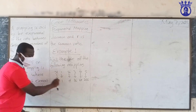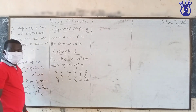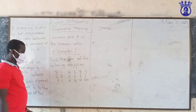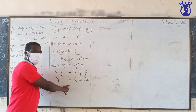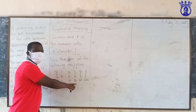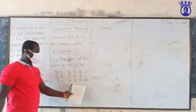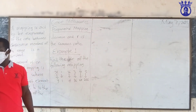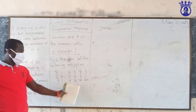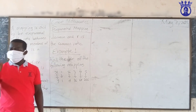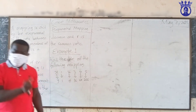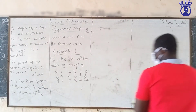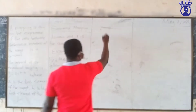Four divided by one gives you four. Sixteen divided by four gives you four. Two hundred and fifty-six divided by sixty-four gives you four. So there is a common ratio of four — this confirms it is an exponential mapping.